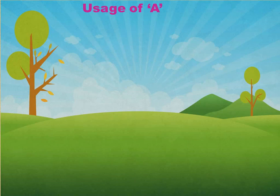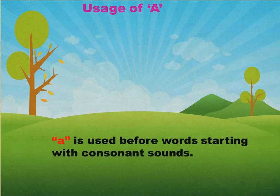In our last video, we have seen usage of AN and we said that AN is placed in front of the words which start with a vowel sound — A, E, I, O and U. Now let's see the usage of A.